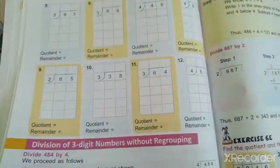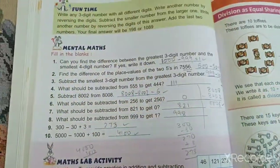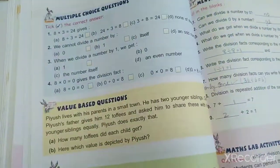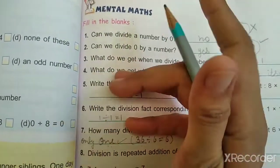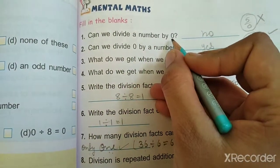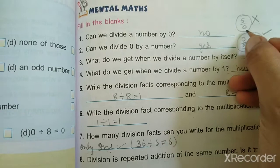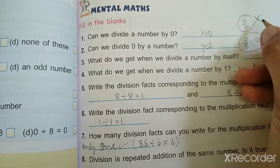Let's start chapter number five mental maths. This is about division. First question: Can we divide a number by 0? No, everyone. We cannot divide a number by 0.